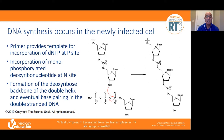The primer provides a template for incorporation of the dNTP at the P site, and the process incorporates a monophosphorylated deoxyribonucleotide at the N site. This is critical because there's formation of the deoxyribose backbone of the double helix and eventual base pairing in the double-stranded DNA. On the right, you can see how the triphosphorylated nucleotide provides energy for this reaction and how the monophosphorylated nucleotide is incorporated into the backbone of the forming DNA chain.